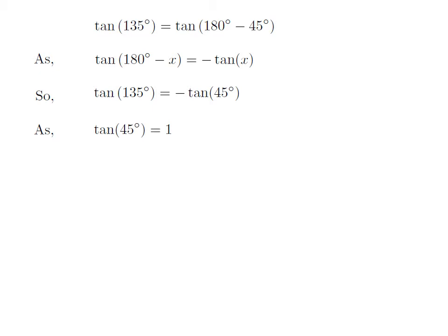As we know, the value of tangent of 45 degrees is equal to 1. So, tangent of 135 degrees is equal to minus 1.